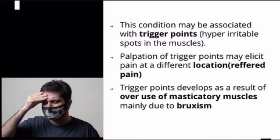This condition is usually associated with trigger points. Trigger points are hyper-irritable spots in the muscle which, when palpated, trigger a burst of pain. Palpation of these trigger points elicits pain usually at different locations — not at that particular point — which we commonly call referred pain, usually radiating to the back and neck muscles.